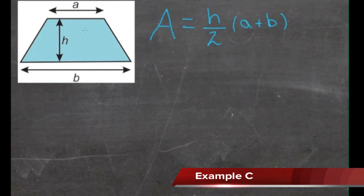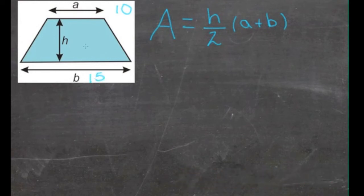The trapezoid we're given has a value of 10 for a, 15 for b, and 8 for h. That 8 is hard to read.